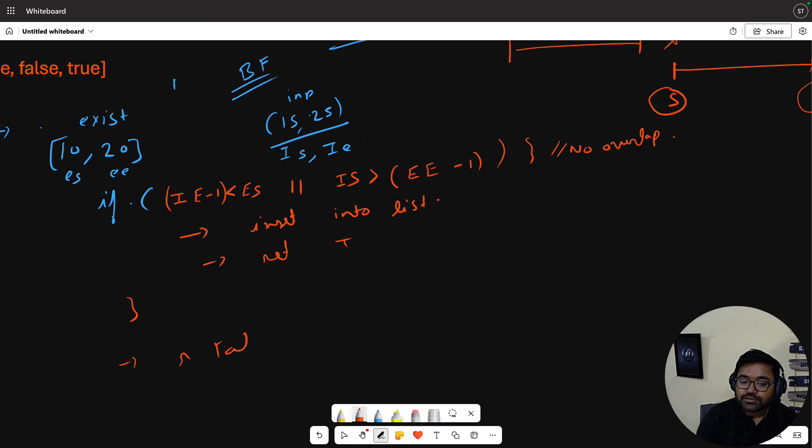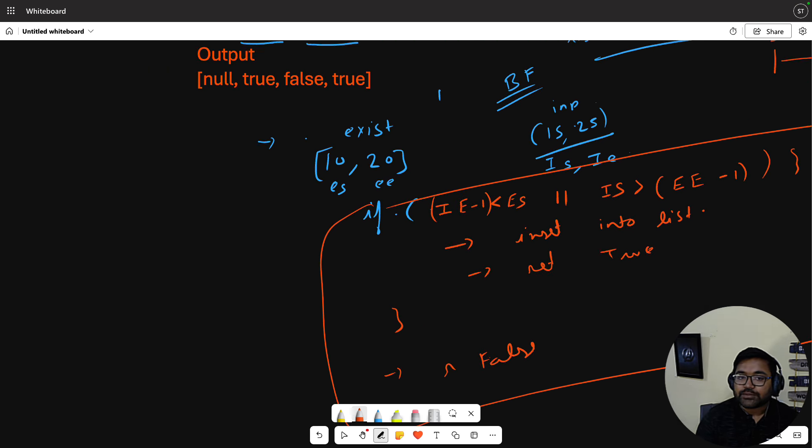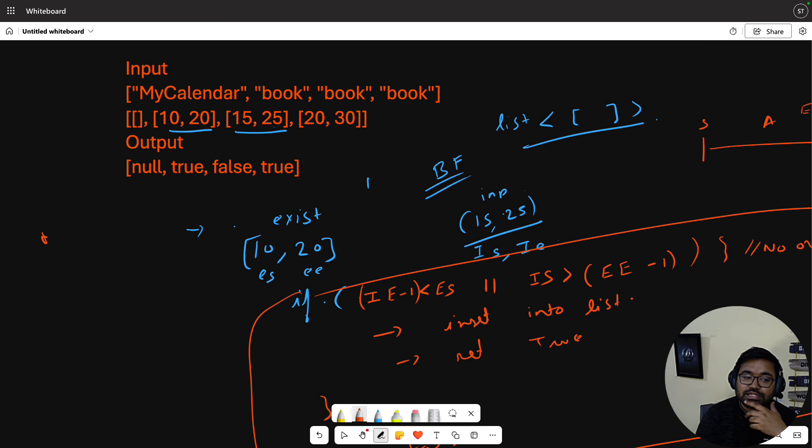When there is no overlap you can insert into the list and return true, otherwise return false. This is the brute force approach. The time complexity is obviously n-squared.